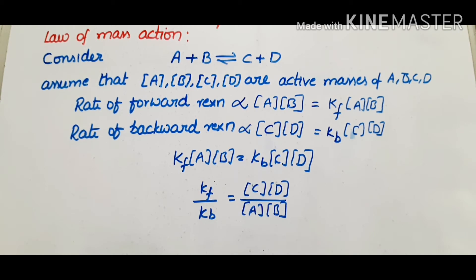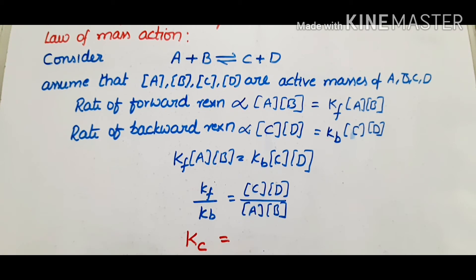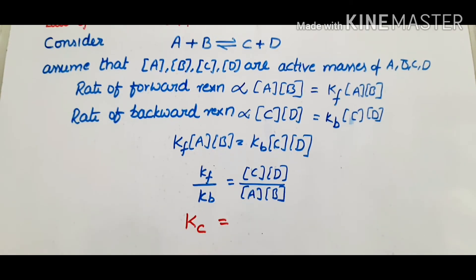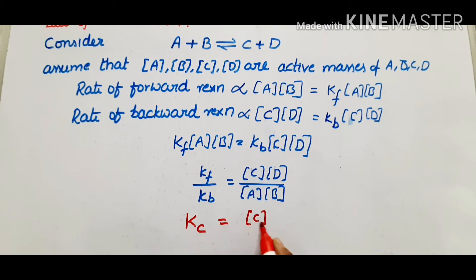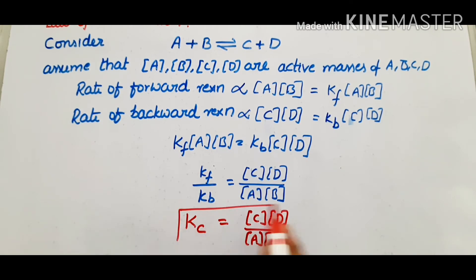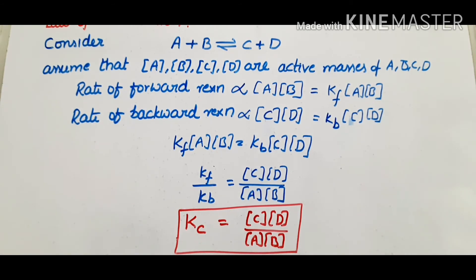What is Kc? Kc is nothing but the equilibrium constant. Kc equals concentration of C into D divided by A into B. This is the equilibrium constant of the given reaction.